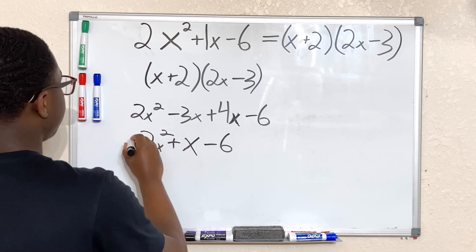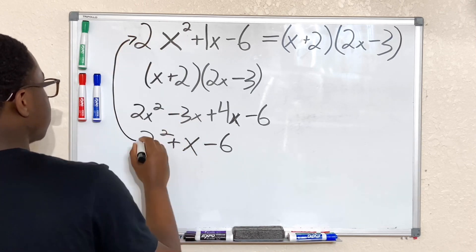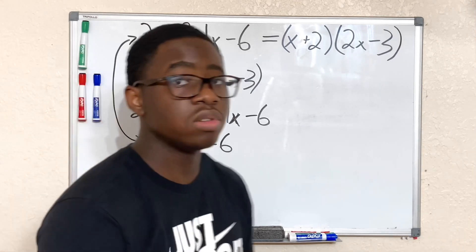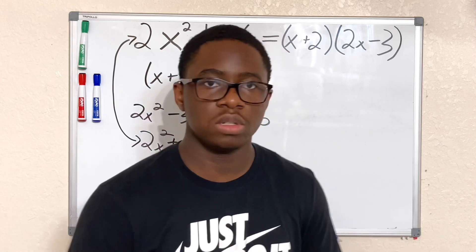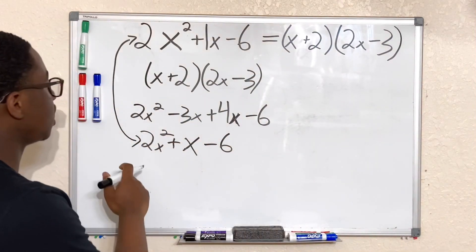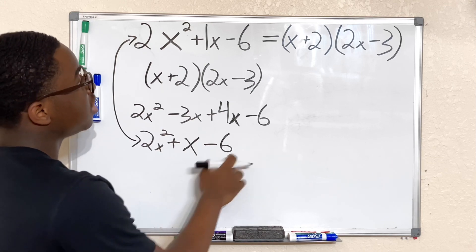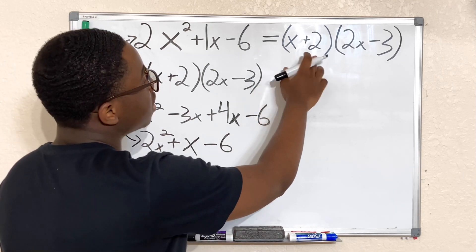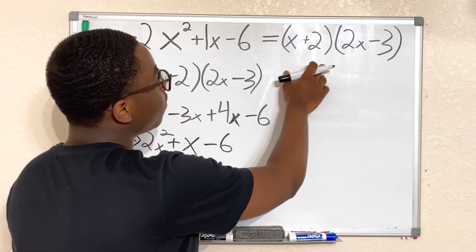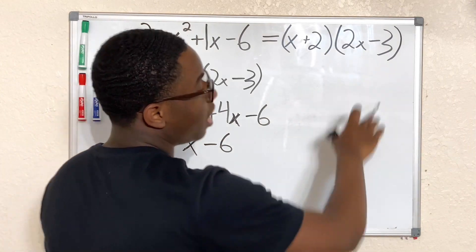There we have it. If you want to put the 1x there, it's optional, but same thing as our equation at the top. These are the exact same. So as always, make sure as soon as you finish doing your work, check over it. Doesn't hurt. So our answer again, 2x squared plus x minus 6 is the same as (x + 2)(2x - 3).